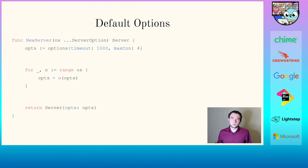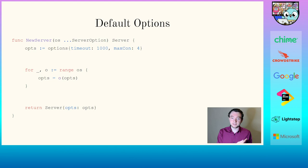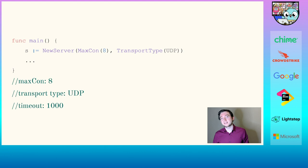In this way, when we iterate through all the options coming into our constructor, we keep reassigning them. But if something is not present — for example the timeout is not passed — it is not overwritten and we have the thousand as a default value. So calling newServer with eight maximum connections and type UDP, we see that maximum connections has been changed, transport type is set, but the timeout is the one thousand default we defined earlier.